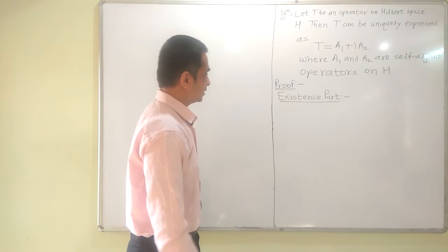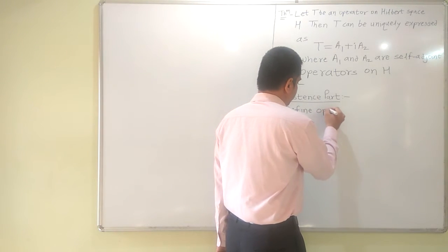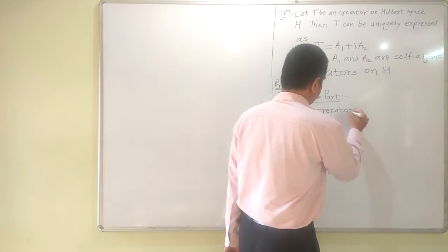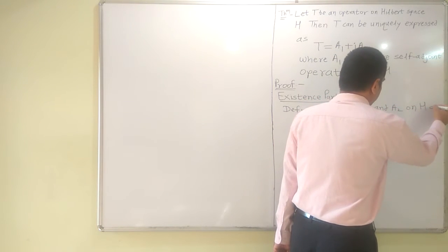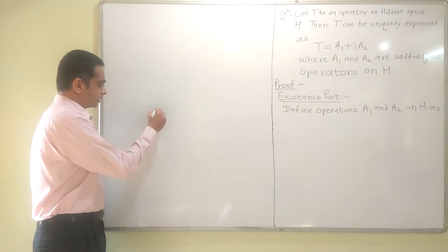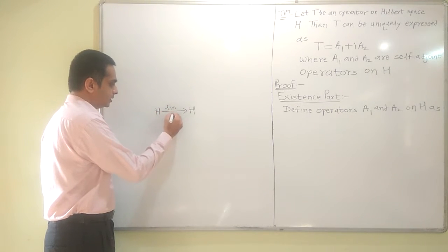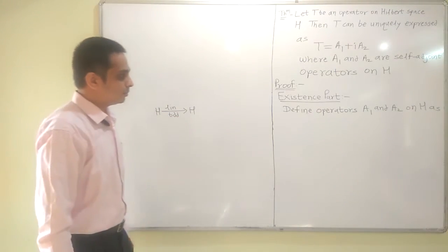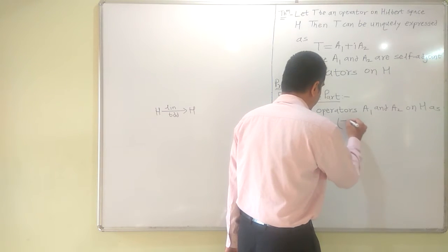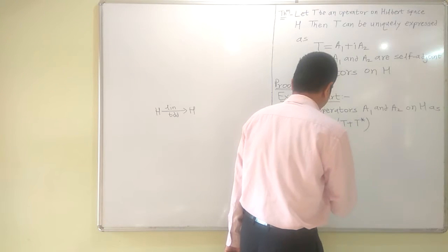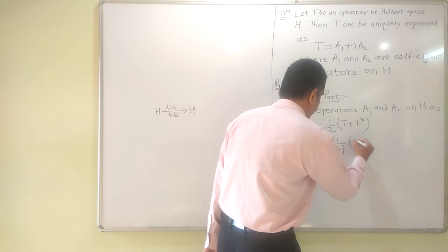Define operators A1 and A2 on H as follows. An operator is simply a function from H to H which is linear and bounded. Define A1 = (1/2)(T + T*) and A2 = (1/2i)(T - T*).